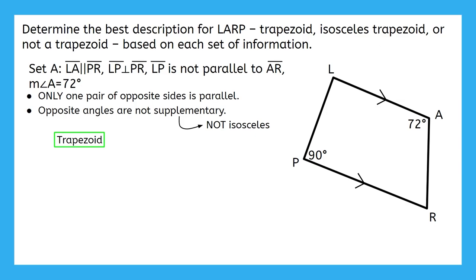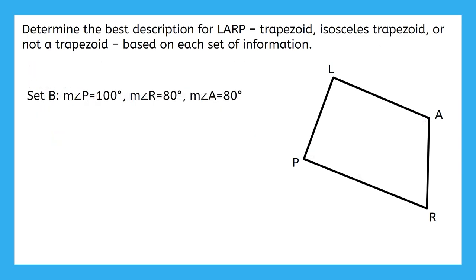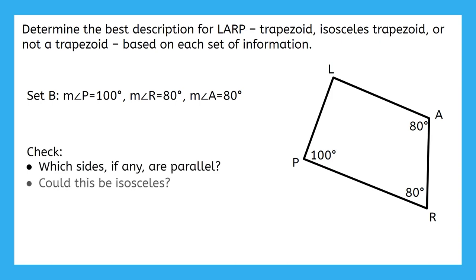Let's take a look at set B next. Set B says the measure of angle P is 100 degrees, the measure of angle R is 80 degrees, and the measure of angle A is 80 degrees as well. There's not much to mark here, but I can fill in my angle measurements. What you should be doing is using these angle measurements to check which sides, if any, are parallel, and whether or not this could be isosceles. Pause the video here to check these.